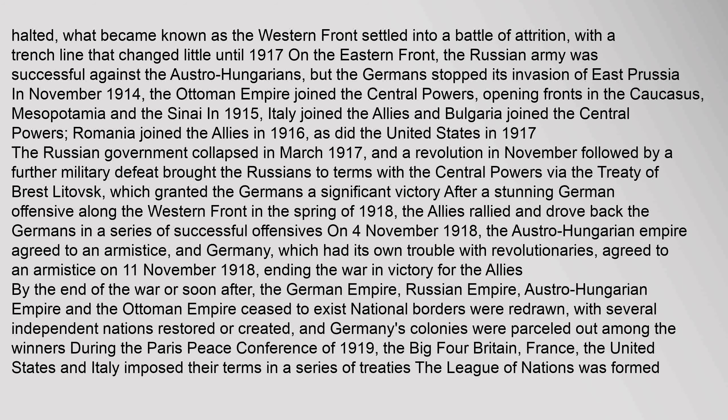Italy joined the Allies and Bulgaria joined the Central Powers. Romania joined the Allies in 1916, as did the United States in 1917. The Russian government collapsed in March 1917, and a revolution in November, followed by further military defeat, brought the Russians to terms with the Central Powers via the Treaty of Brest-Litovsk. After a stunning German offensive along the Western Front in the spring of 1918, the Allies rallied and drove back the Germans in a series of successful offensives. On 4 November 1918, the Austro-Hungarian Empire agreed to an armistice, and Germany agreed to an armistice on 11 November 1918, ending the war in victory for the Allies.